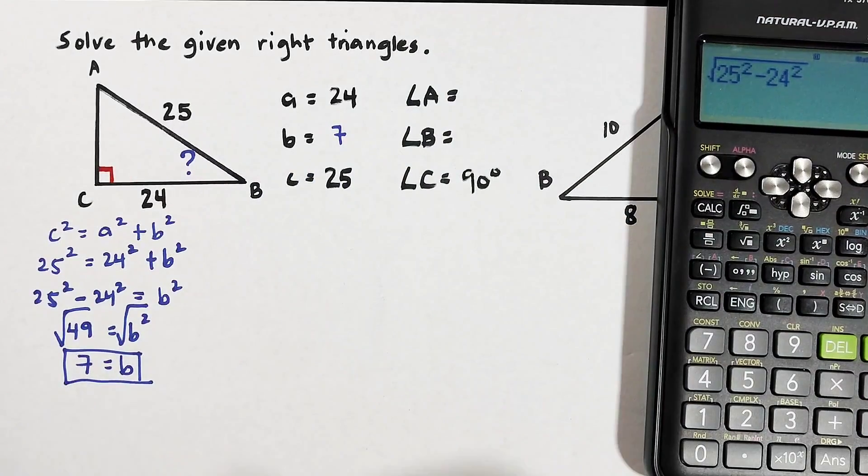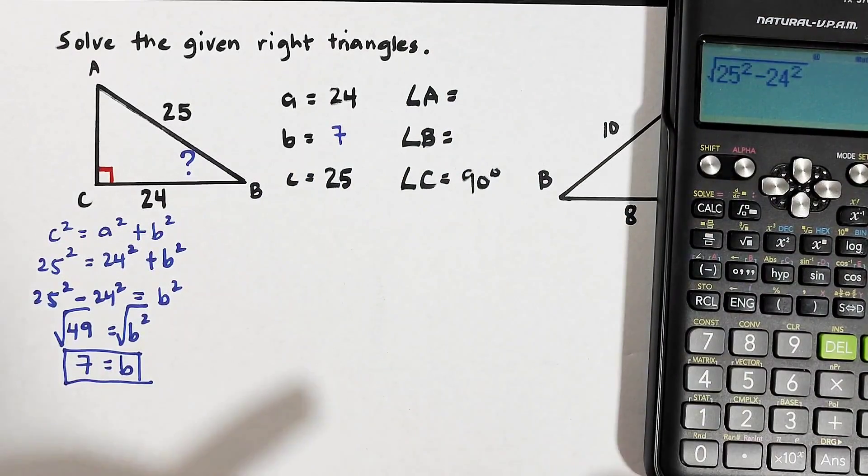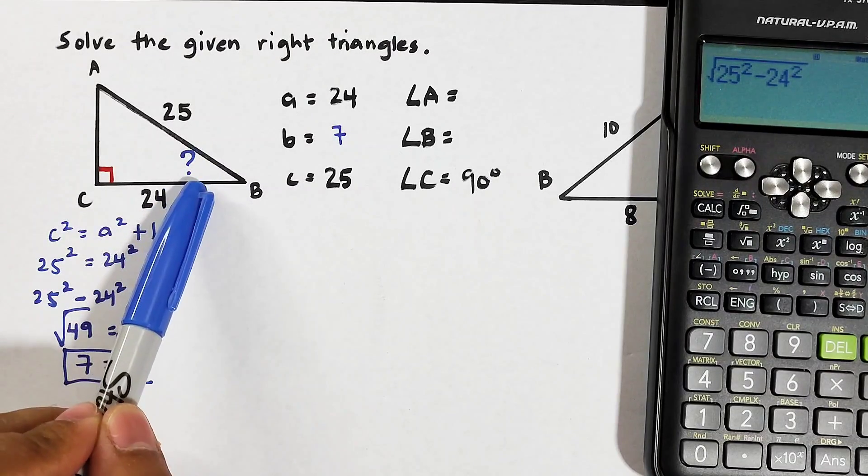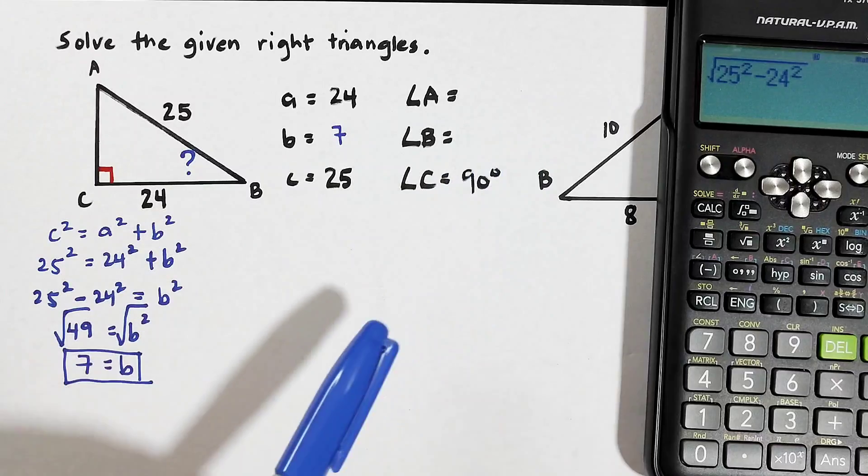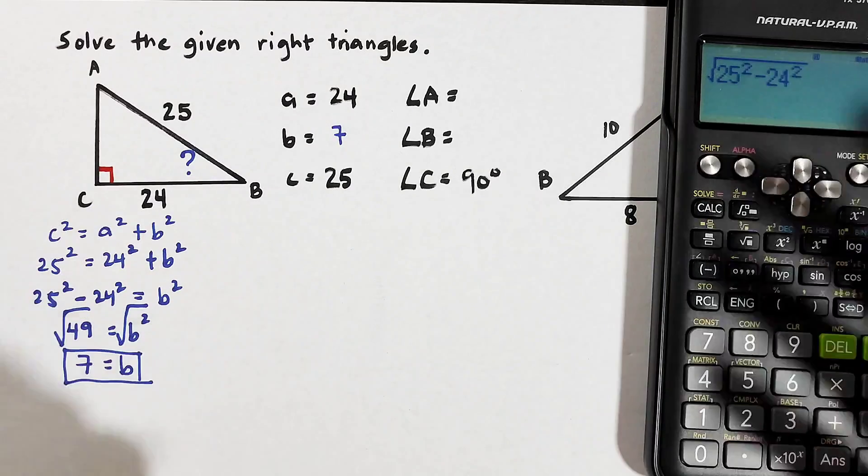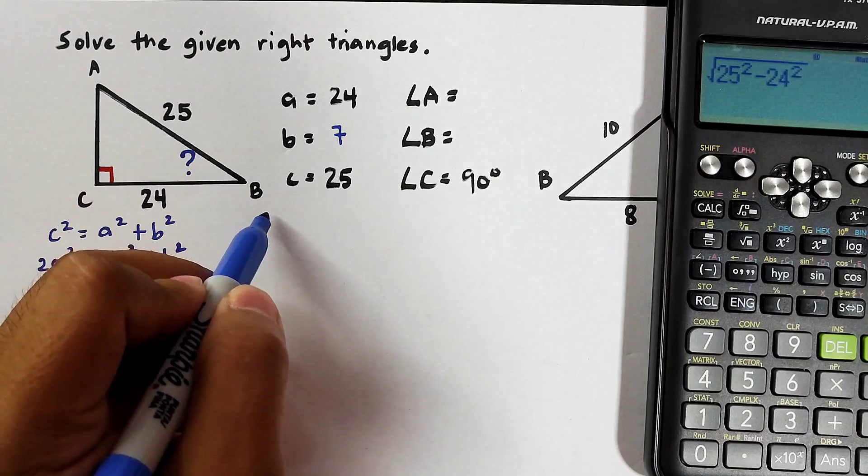What about the angles? For the angles, let's start here in the main problem and then later on we will solve for angle B. For the side b, what we need to do is to remember the six trigonometric ratios and to make it short we can use SOHCAHTOA.